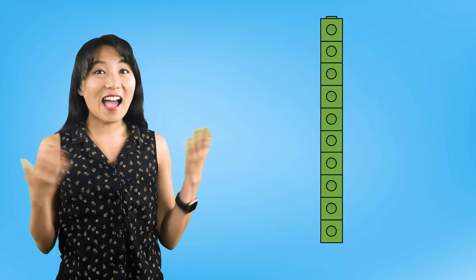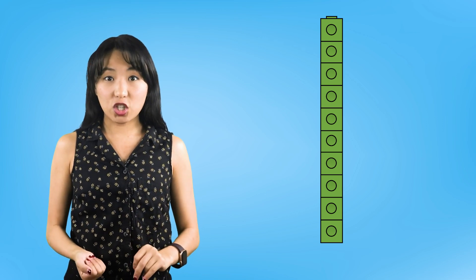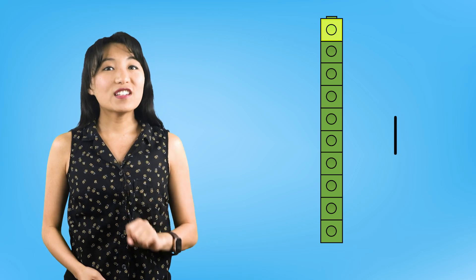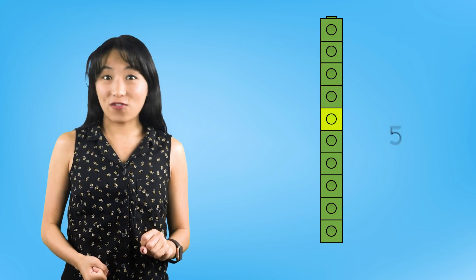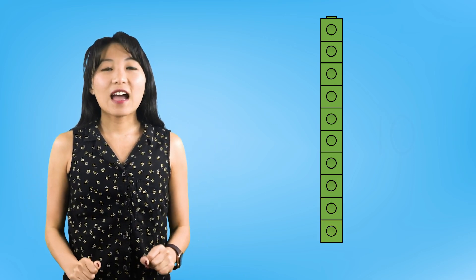I took some of my snap cubes and built a tower. This tower represents the whole or the total of all of the cubes. Let's count how many cubes are in the whole: 1, 2, 3, 4, 5, 6, 7, 8, 9, 10! This tower has 10 cubes, which means the whole is 10.